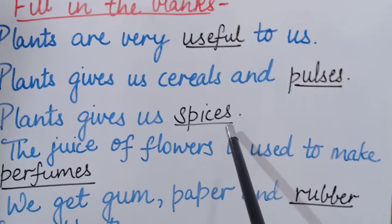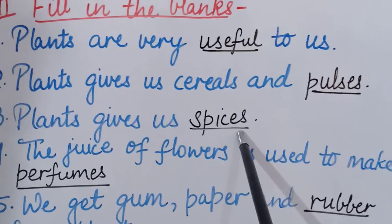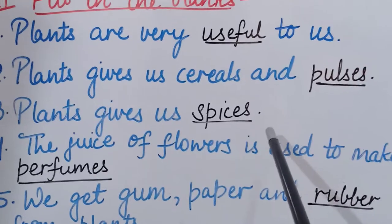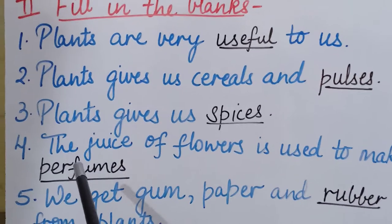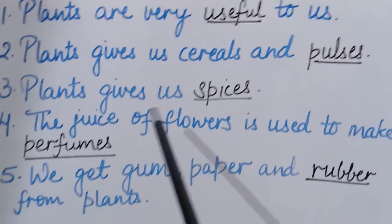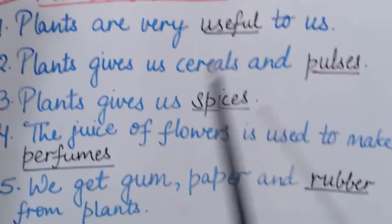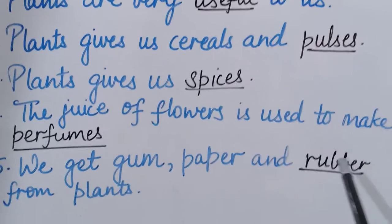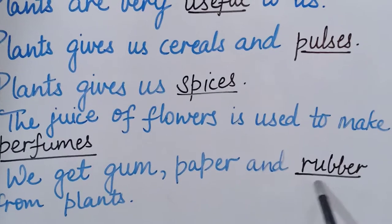Third: plants give us spices. What are spices, children? Masale — S-P-I-C-E-S, spices. Fourth: the juice of flowers is used to make perfumes. Fifth: we get gum, paper and rubber from plants. R-U-B-B-E-R, rubber. So from plants we get gum, paper and rubber.